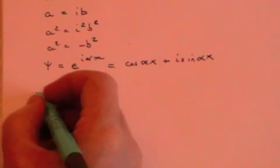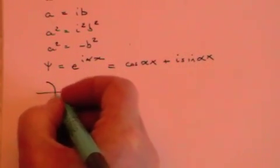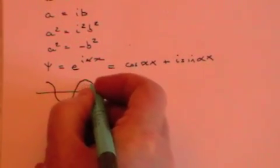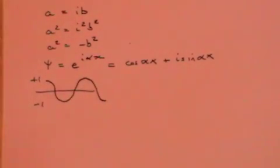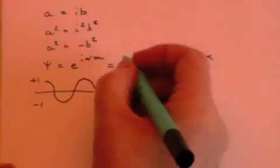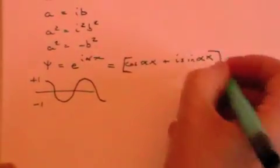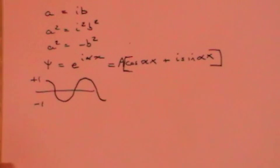Cosine waves oscillate between plus 1 and minus 1. If you want them to oscillate between greater amplitudes, then you simply have to put an amplitude term a in front of the general term for the waves.